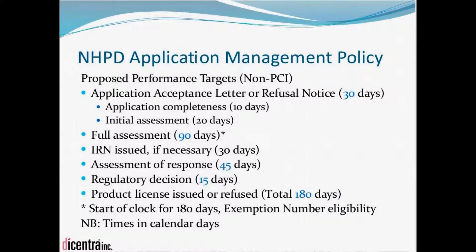For applications not attesting in their entirety to pre-cleared information, we're looking at a proposed performance target of 180 days — again, proposed and not based in law, but what the NHPD is hoping to accomplish. That 180 days is first broken down into receipt of an application acceptance letter or refusal notice within 30 days. They're dedicating approximately 10 days to make sure the application is complete — including the product license application itself, animal tissue forms, safety/quality/efficacy data, label text, etc. — and then an initial assessment of the quality of the data submitted. Within 30 days, you'll know whether you get an acceptance letter or a refusal notice citing critical deficiencies. The acceptance letter will give you information about applying for an exemption number — how, when, and where.